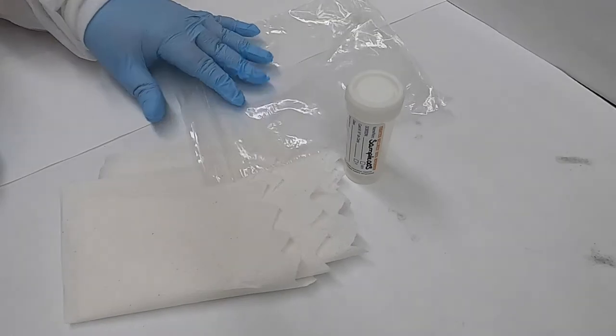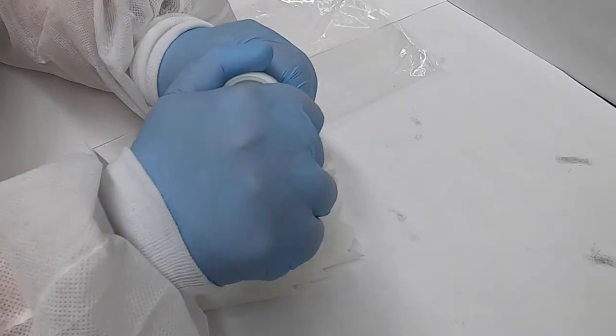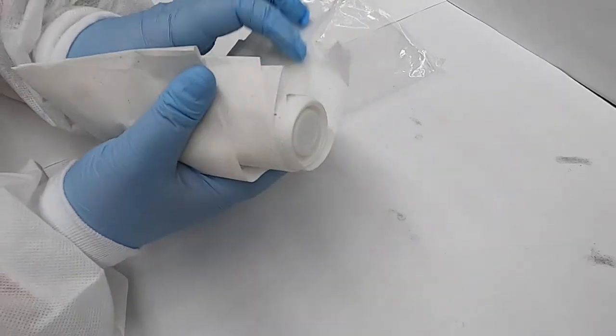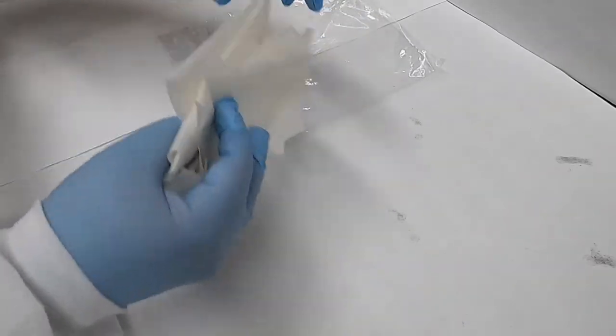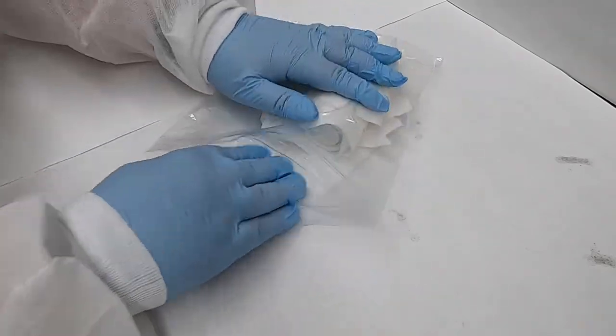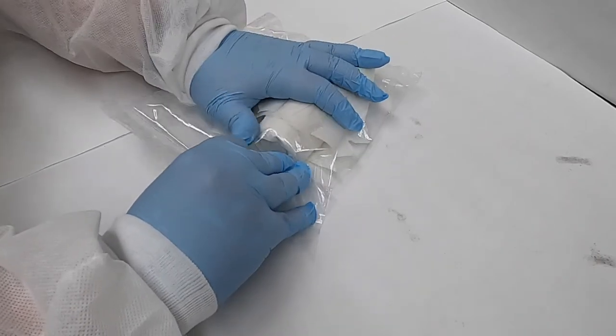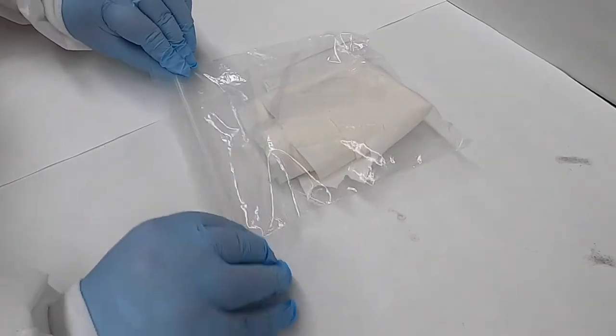So in this case, we have a plastic tube with perhaps a fecal sample in it. We ensure that it's sealed completely, wrap it in our water absorbent material that's sufficient to absorb any liquids that may be present in that sample, and then seal it in the watertight Ziploc bag, being careful to remove all of the air.